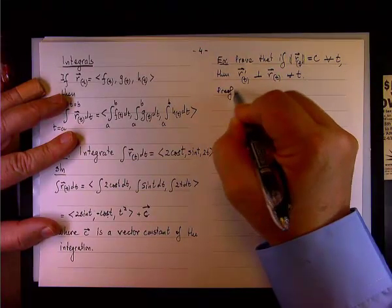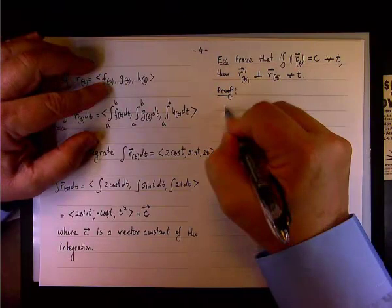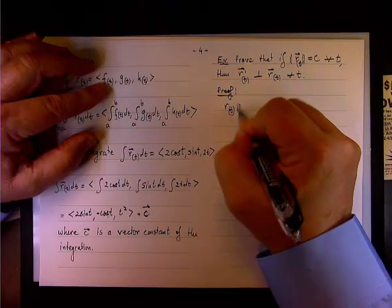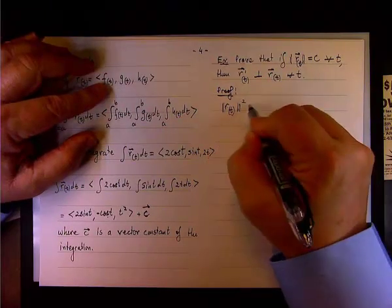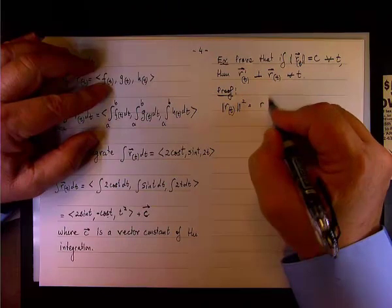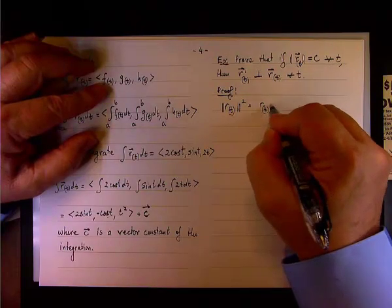The proof goes like this - it's a nice little proof. If we square the magnitude of r(t), it will be simply r dot r.